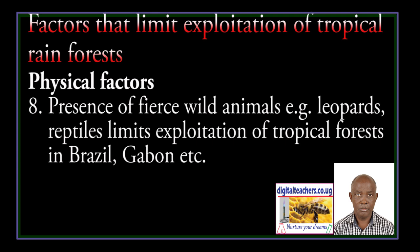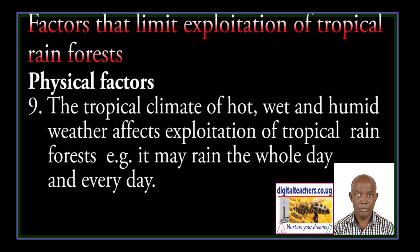Presence of fierce animals, for example leopards and reptiles, limits exploitation of tropical forests in Brazil, Gabon, and so on. The tropical climate of hot, wet, and humid weather affects the exploitation of tropical rainforests — for example, it may rain the whole day and every day.